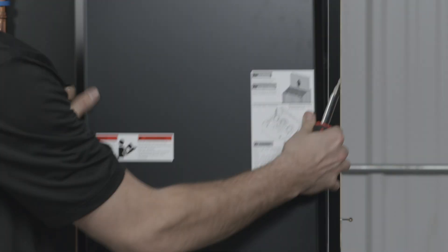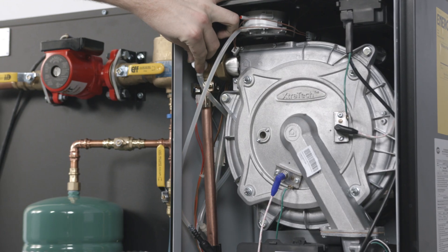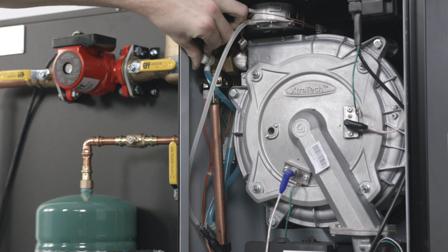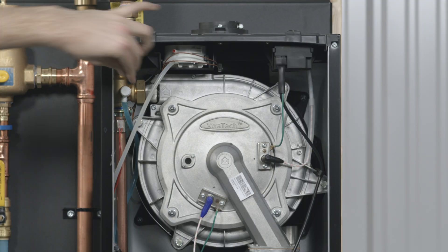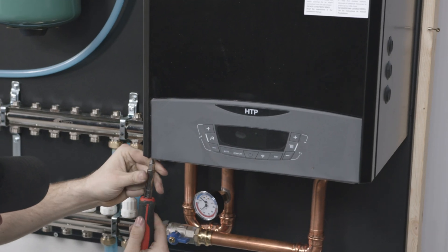Remove the boiler's front panel. Open the purge valve on the boiler until the liquid coming through has no more air bubbles. Close the valve. Replace the boiler cover.